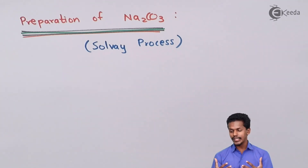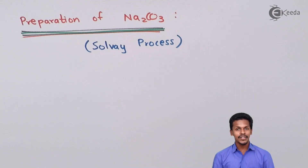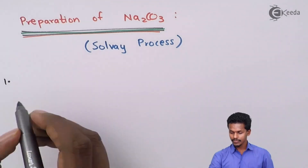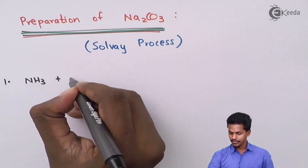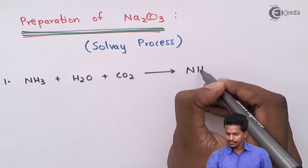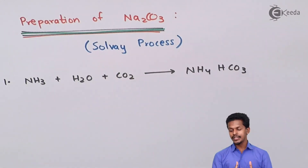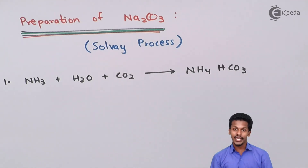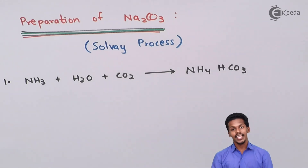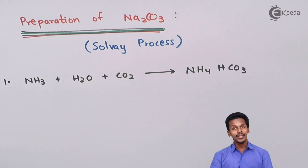We are going to talk about the preparation of Na₂CO₃ in multiple steps. The first step involves the reaction of ammonia along with H₂O and carbon dioxide so as to form ammonium hydrogen carbonate. This is achieved when ammonia and carbon dioxide are bubbled into a brine solution — a solution which consists of NaCl — and that is how we get ammonium hydrogen carbonate.